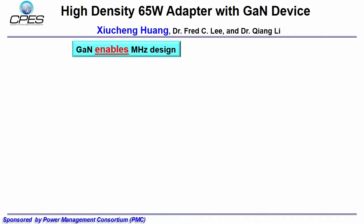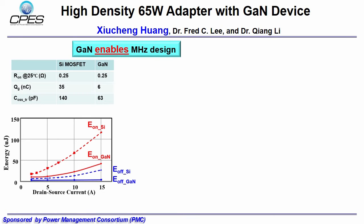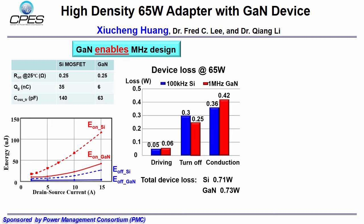The emerging Gallium Nitride devices offer the opportunity to push to high frequency to increase power density without sacrificing efficiency. The table shows the key parameters of a comparable GaN switch and silicon MOSFET. The GaN device has much smaller gate charge and junction capacitance, which basically means smaller switching-related loss. The switching energy curve shows the superiority of the GaN switch. The turn-on loss is much smaller and moreover, the turn-off loss is negligible compared to silicon MOSFET. The loss breakdown of the 65W adapter shows that even when the frequency for GaN switches is 10 times higher than silicon MOSFET, the device-related loss is very similar. Therefore, we can push the frequency to the MHz range to reduce passive component size.